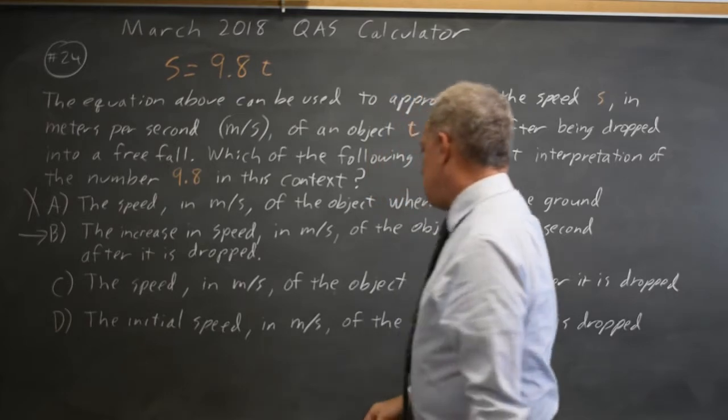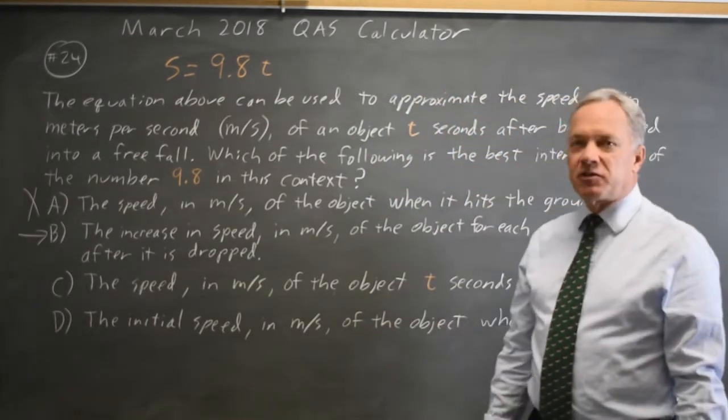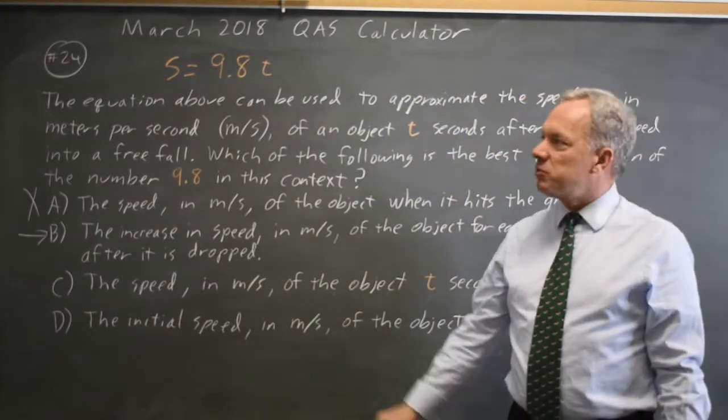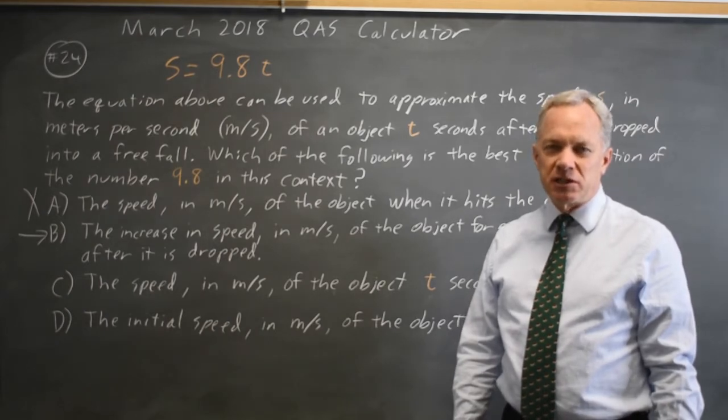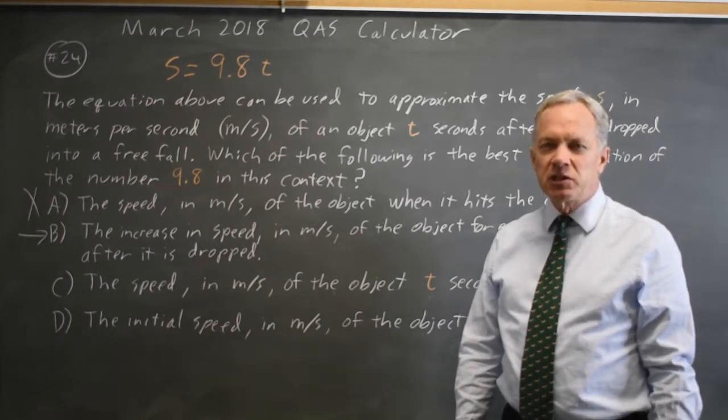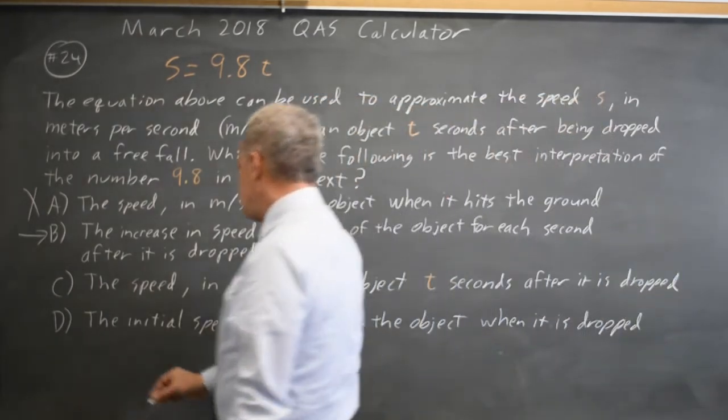Choice C says the speed t seconds after it's dropped, but that doesn't work because that's only correct at t equals 1. At t equals 0, the speed was 0, and at t equals 2, the speed was 19.6, so C is not correct.